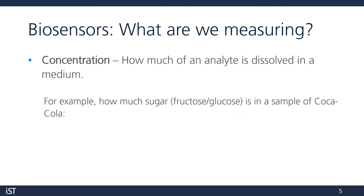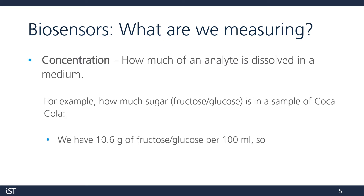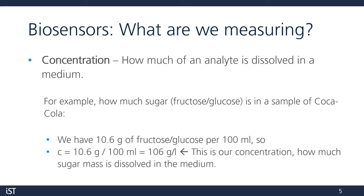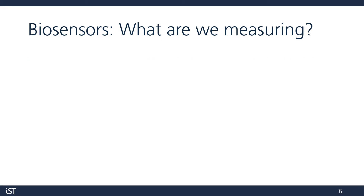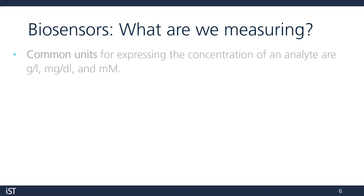Let's take an example, like how much sugar is dissolved in a sample of Coke. We have 10.6 grams of fructose and glucose per 100 milliliters. Therefore, our concentration equals 10.6 grams divided by 100 milliliters, which comes out to 106 grams per liter. There are a few units that you'll work with when measuring analyte concentration in your media. Some common ones are grams per liter, milligrams per deciliter, and millimolar.